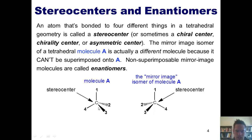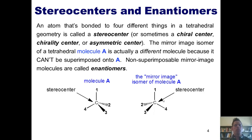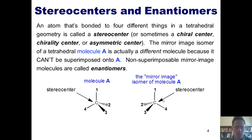So once again, I want you to understand: the molecule on the left and the molecule on the right are three-dimensionally different. The reason is because there's no way that you could take the molecule on the right and rearrange it in space so that each of its individual substituents — 1, 2, 3, and 4 — were pointing in the exact same three-dimensional direction as those in the molecule to the left. This becomes much clearer if you actually build a three-dimensional model yourself.